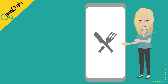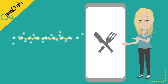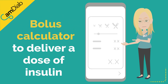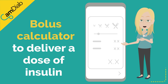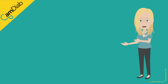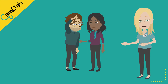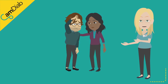The CAM APS FX app has a bolus calculator that people can use to deliver a dose of insulin for meals and snacks. However, there may be times that you eat or drink something containing carbohydrates but not want to bolus a dose of insulin for them, such as when you are hypo or being active.